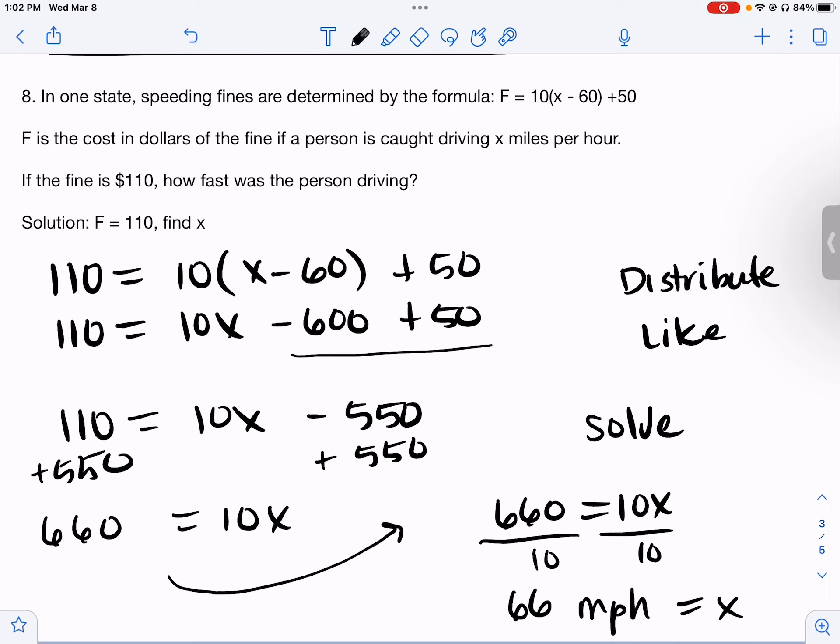So on that right side, multiply 10 times x is 10x, 10 times negative 60 is negative 600. Then we're going to combine the two numbers, like terms: negative 600 plus 50 is negative 550.